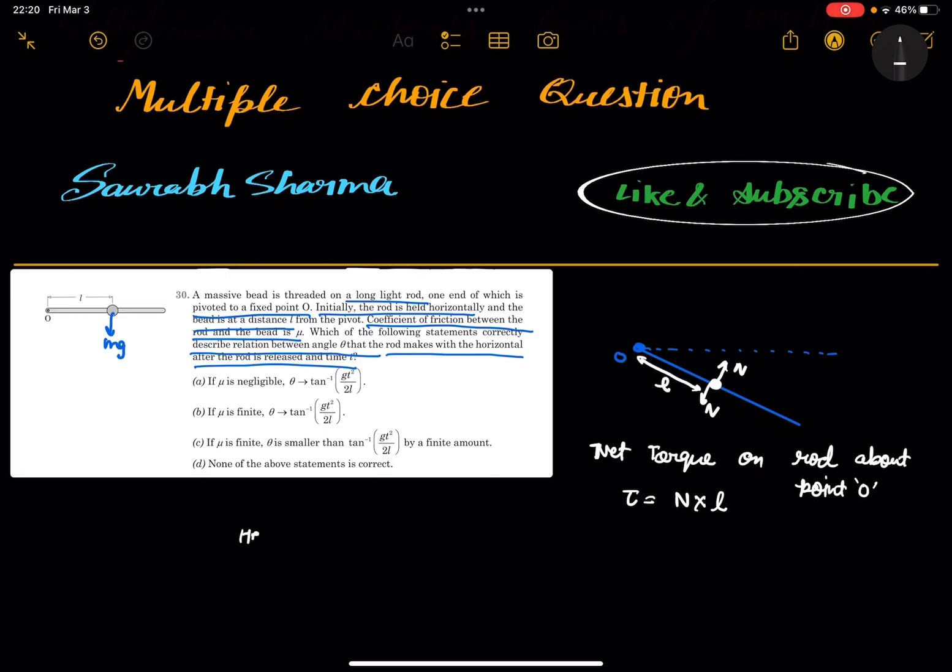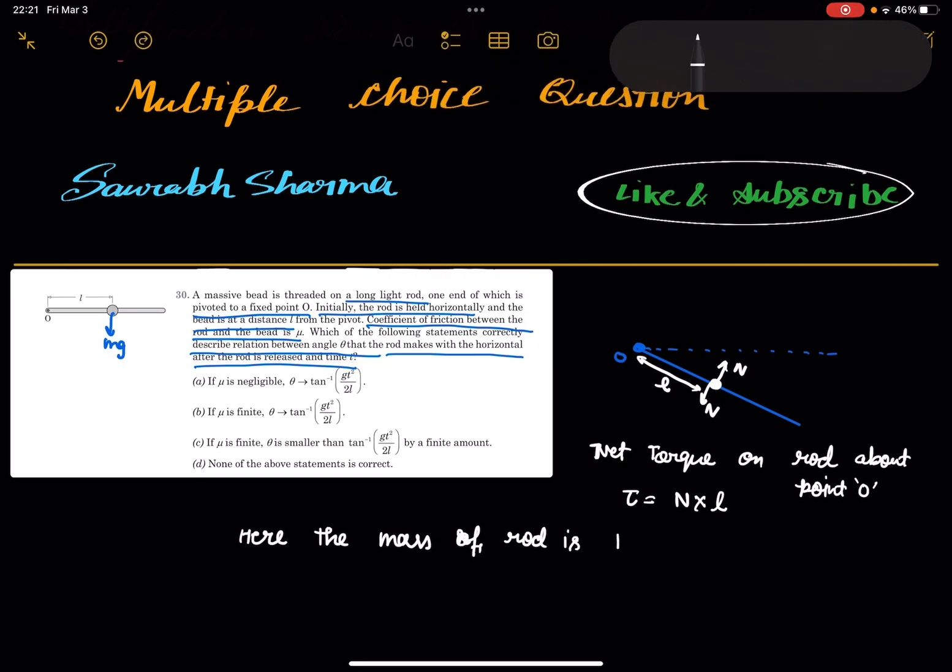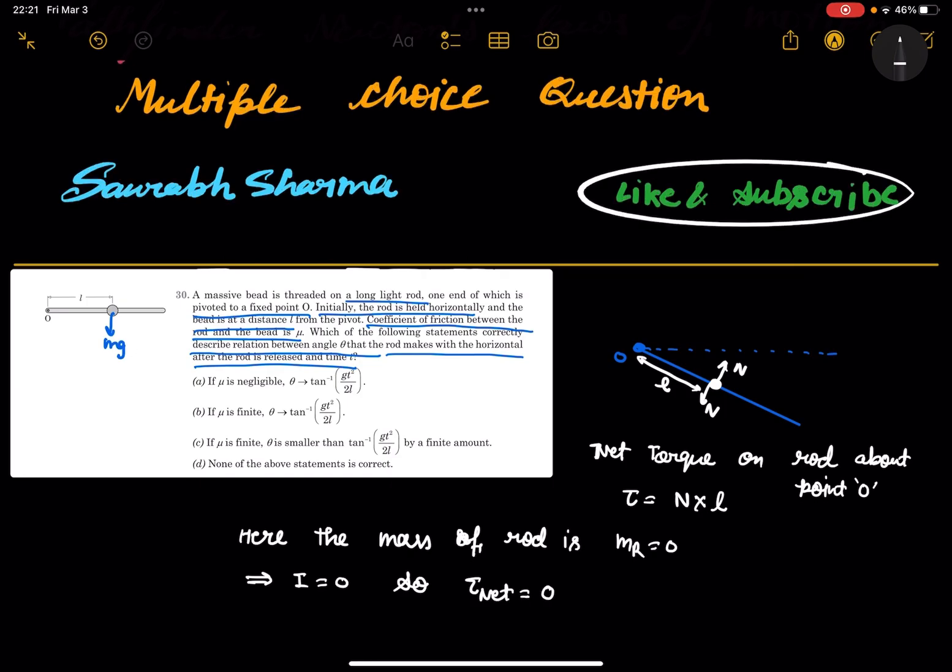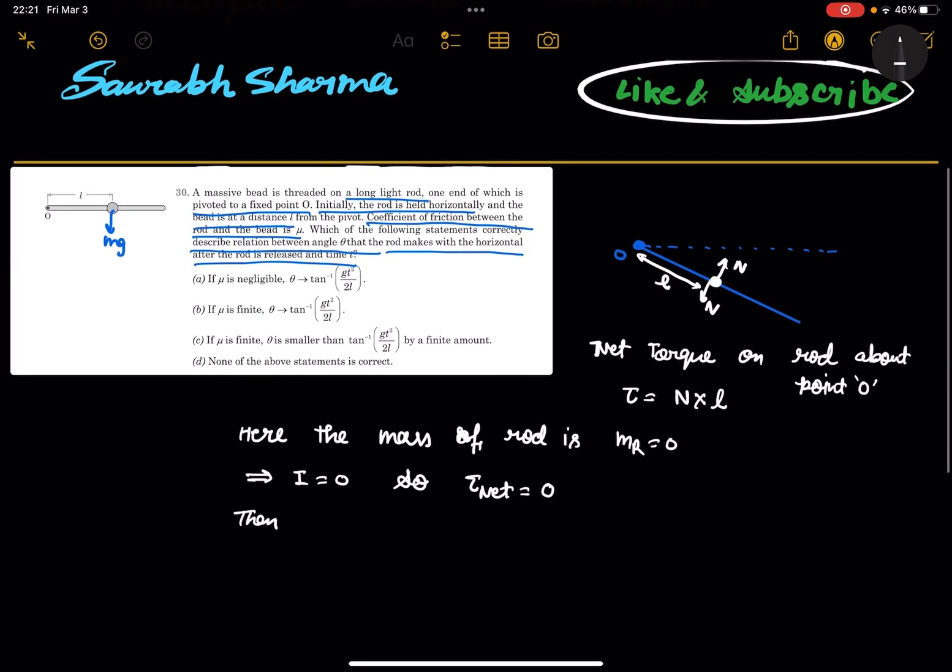Here the mass of rod is negligible or zero, MR is zero. So if the mass of rod is zero, then moment of inertia of the rod is also zero. So net torque on the rod is zero. So if net torque on the rod is zero, then normal reaction on the rod is also zero.